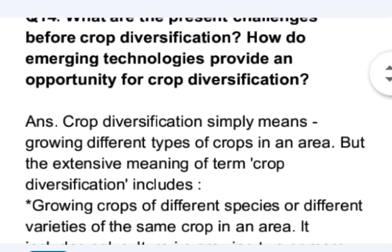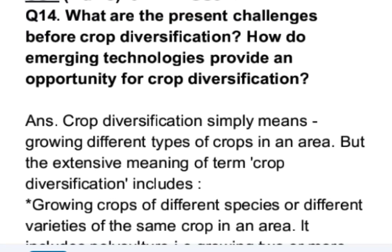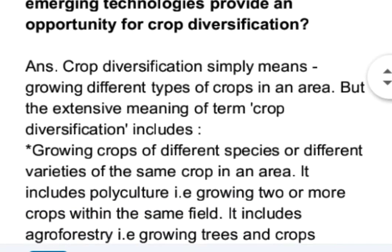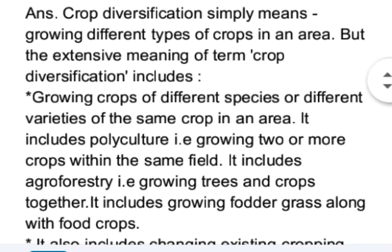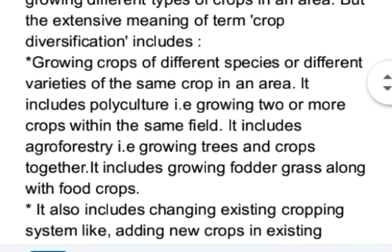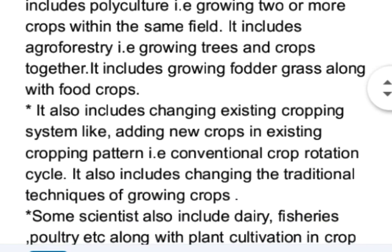Crop diversification simply means growing different types of crops in an area. But the extensive meaning of crop diversification includes growing crops of different species or different varieties of the same crop in an area. It includes polyculture, that is growing two or more crops within the same field. It includes agroforestry, that is growing trees and crops together. It includes growing fodder grass along with food crops. It also includes changing the existing cropping system, like adding new crops in the conventional crop rotation cycle.